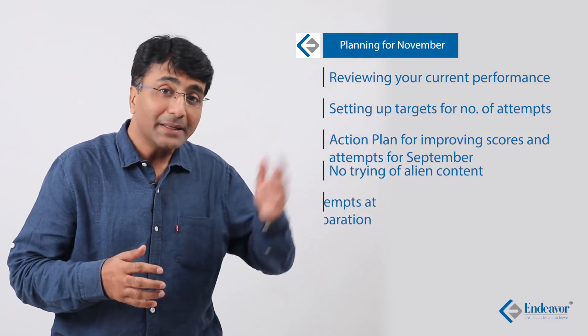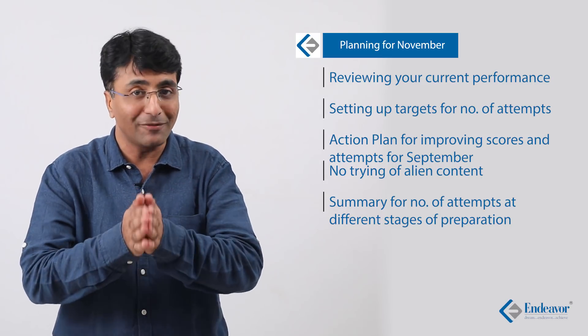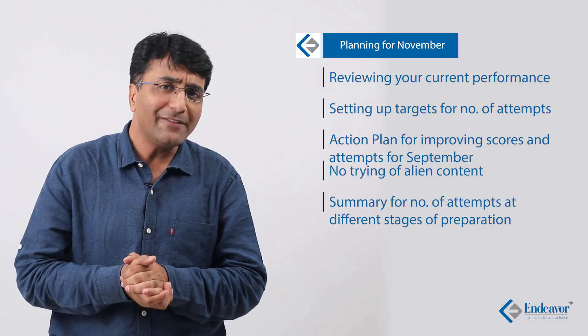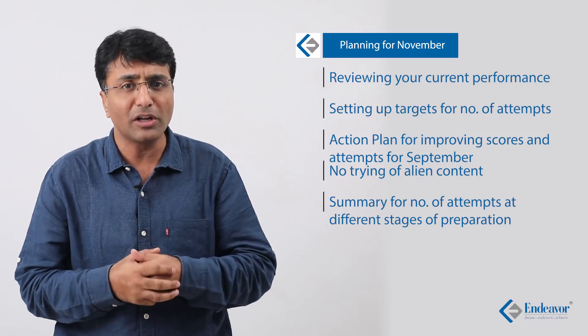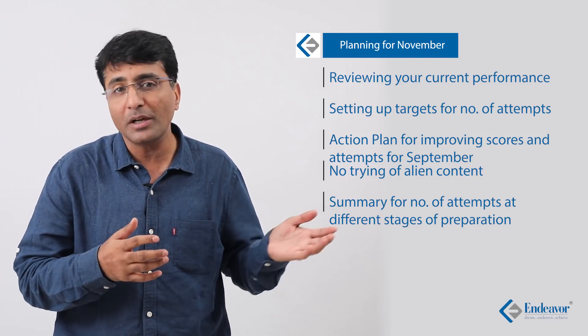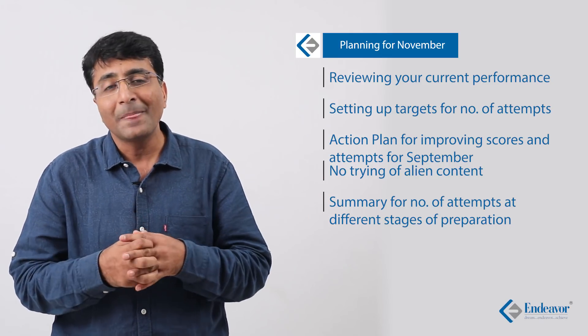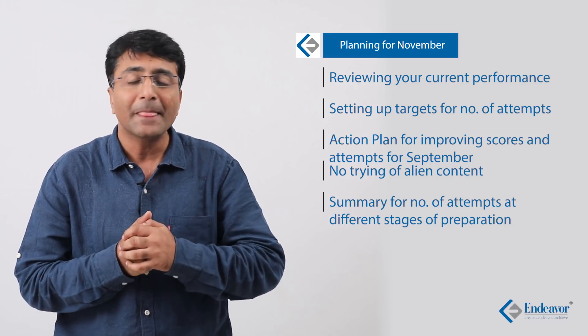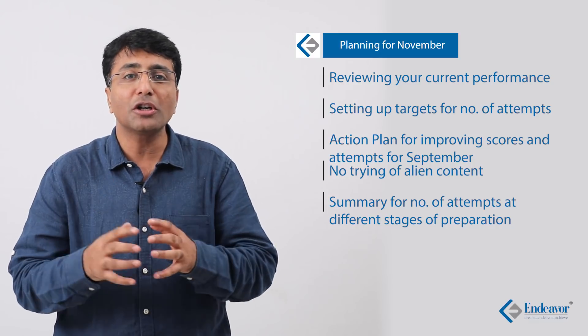To summarize: in September, aim for 18 to 25 attempts with 16 to 18 net correct; in October, push to 25 to 27 attempts with 20 to 23 net correct; and in November, target 30-plus attempts with 26-plus net correct. If you can ensure this progression, you will achieve the desired percentile. I hope this discussion was helpful — please put any queries in the comment section below, and best wishes for CAT 2018.